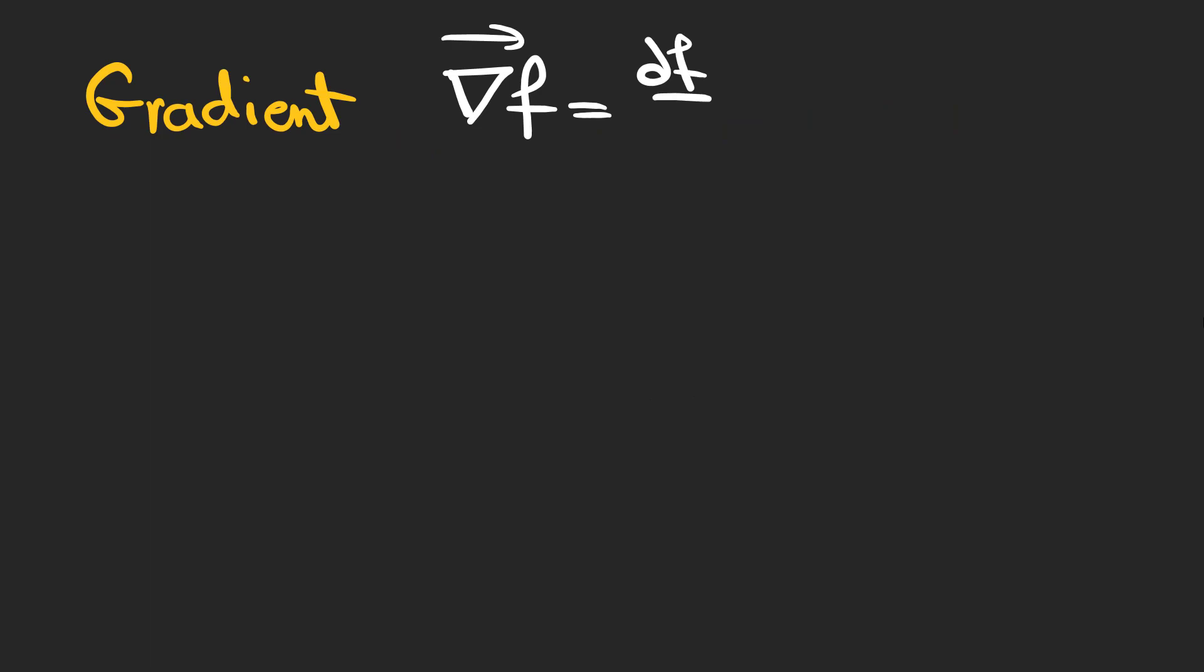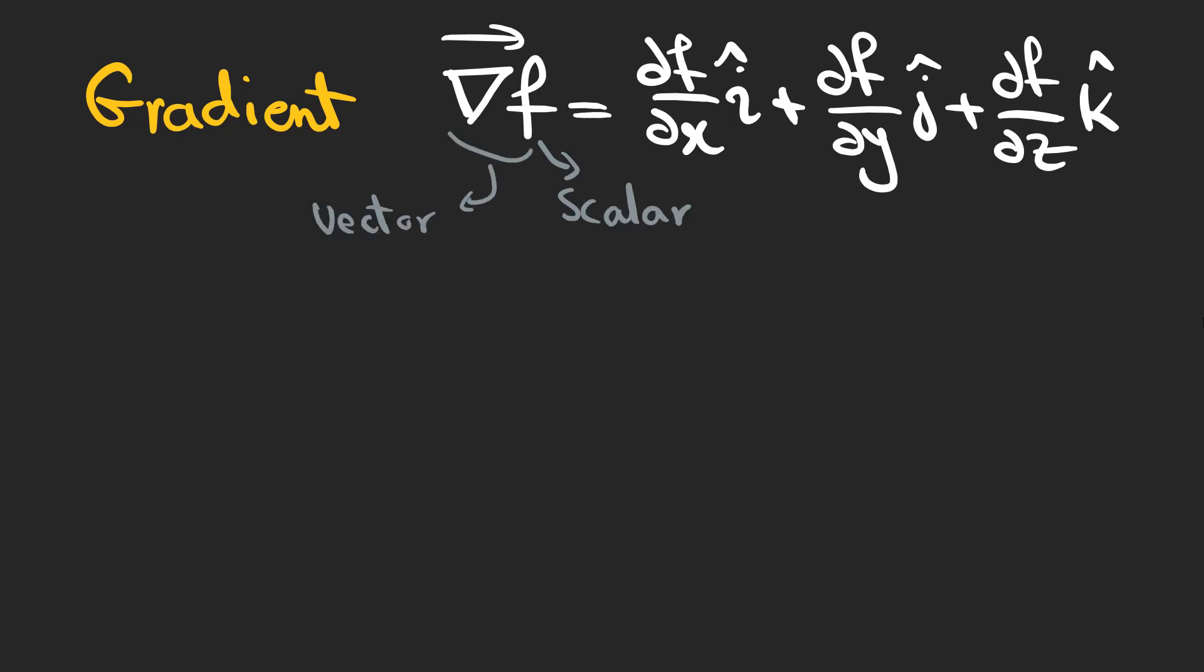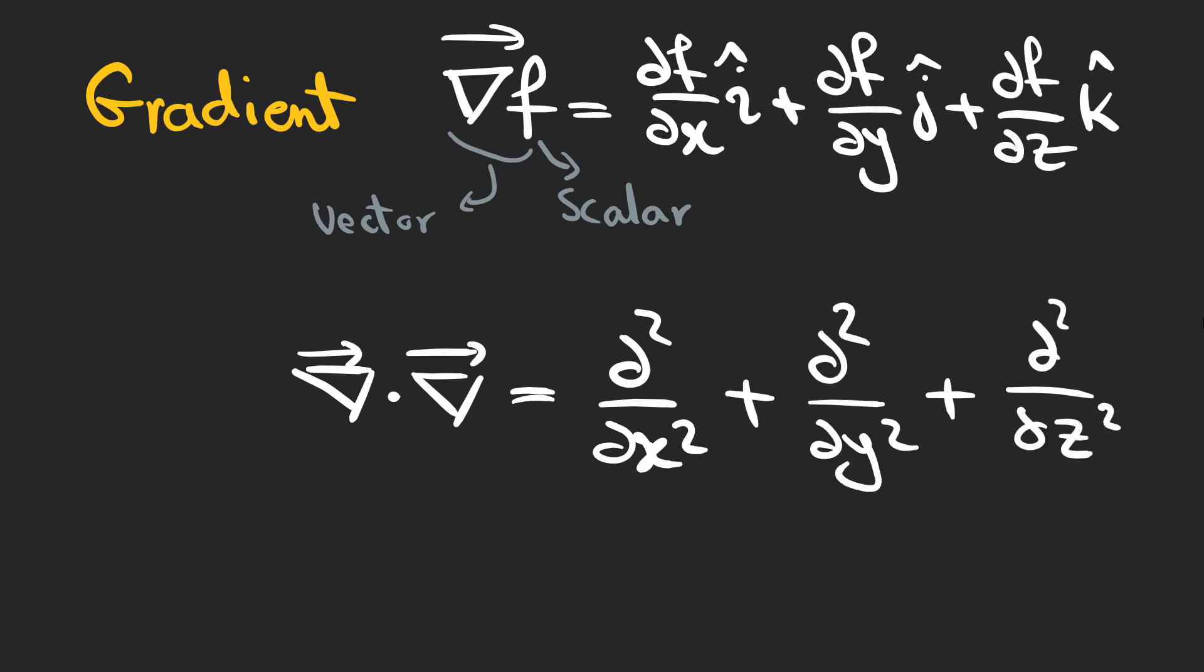We can use the concept of gradients to write the Schrödinger equation in a more efficient way. Gradient of a scalar F gives a three-dimensional vector. We can write a dot product of the gradient operator with itself, which gives a new operator called the Laplacian, which now we can use to introduce a new form of the Schrödinger equation.